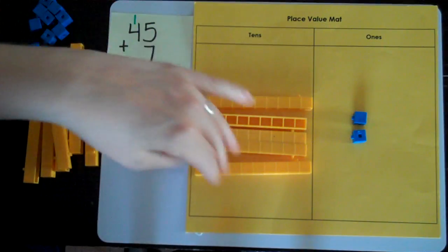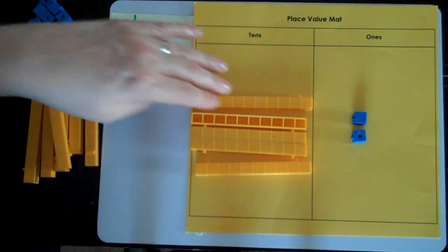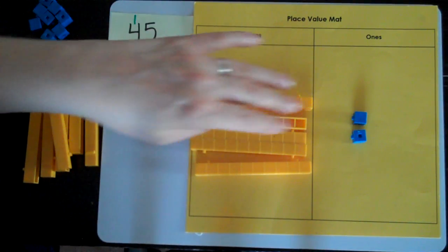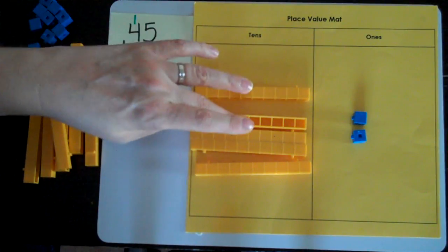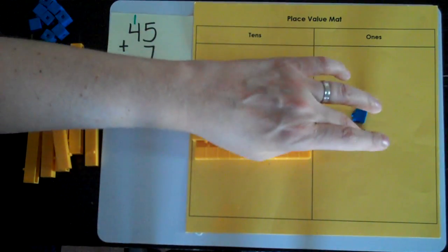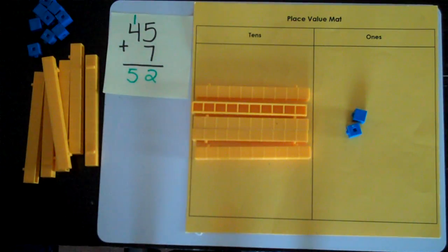Before I go on, I can count to see if that makes sense. So I'm going to count to see if my number is 52. 10, 20, 30, 40, 50, 51, 52. And it makes sense. It looks right. And I did lots of double checking along the way. So I feel pretty confident that that's the correct answer. So I'm now ready to go on to my next question.